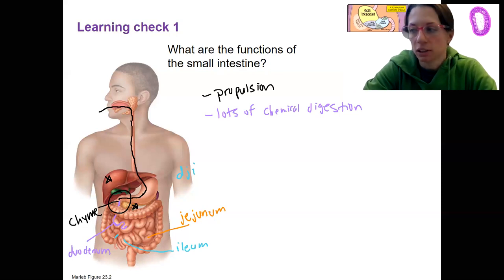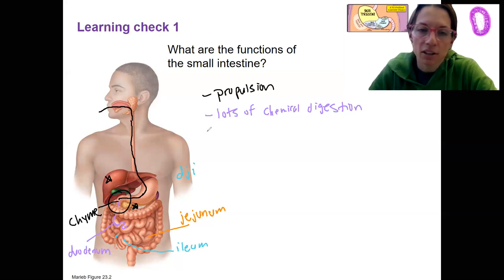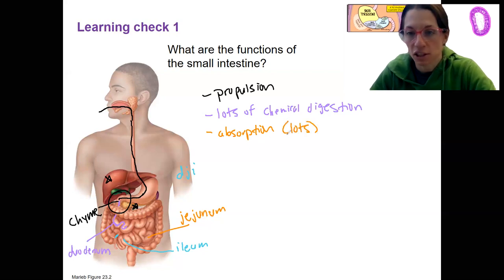This is where we also control gastric emptying. We'll talk about the pancreas and liver's role, of course. We are going to have absorption as well. It's happening throughout the entire small intestine, but it does happen more as we move on because as the chemicals start to break down, we can start to absorb them. So absorption, lots of absorption, that's going to be at the three regions but happen a little bit later on.